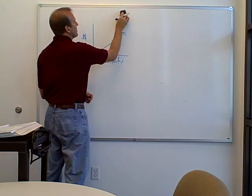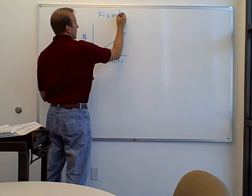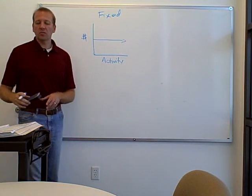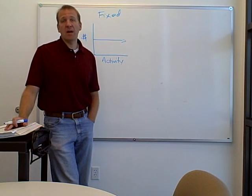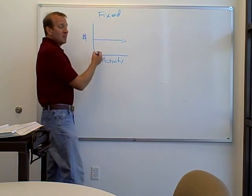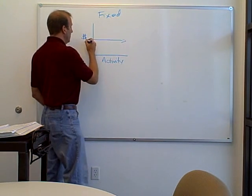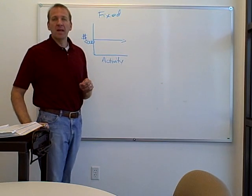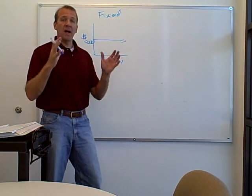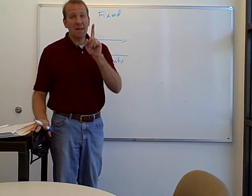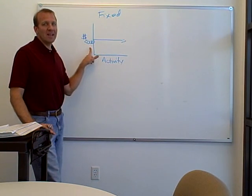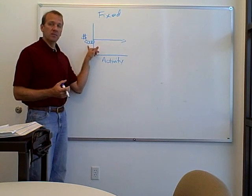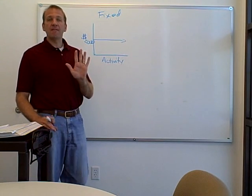Fixed costs don't change depending on volume or activity. Let's say we're renting space to produce our tents, and the monthly rent is $5,000 a month. It doesn't matter if we make one tent or a thousand tents — the cost is $5,000 a month. We can really take advantage of fixed costs to bring the cost per product down. If we make just one tent, the full $5,000 goes into that tent. But if we produce a thousand tents, we take $5,000 divided by 1,000, meaning we allocate only $5 to each tent.